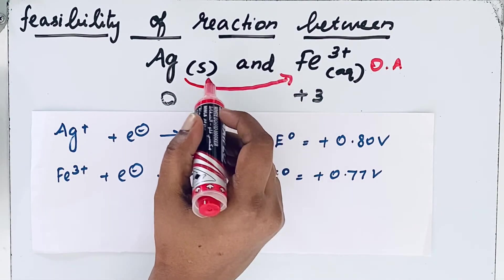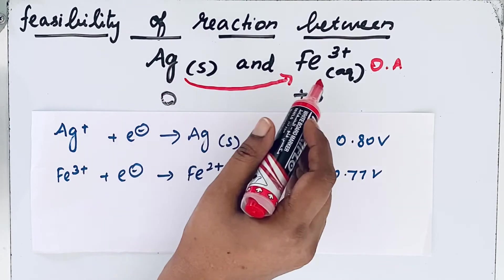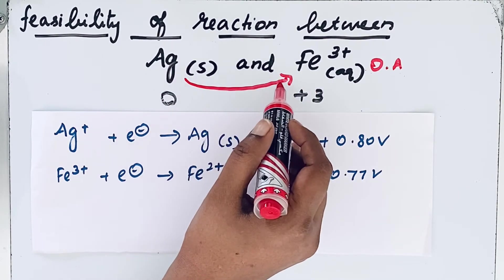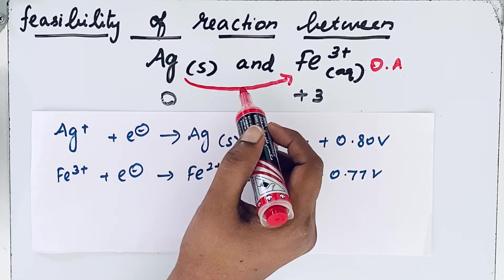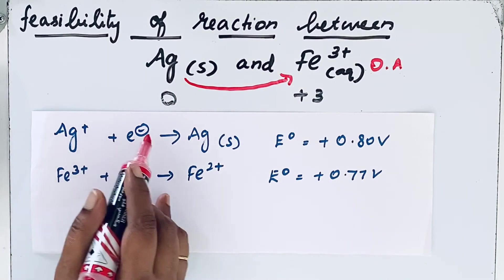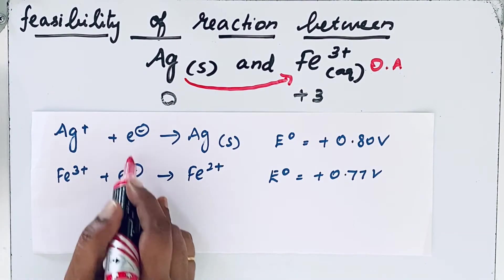But in our example, Ag and Fe³⁺, Fe³⁺ is gaining electrons, so Ag is losing electrons. But here, see, it is given as both gaining electrons, gaining electrons.